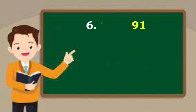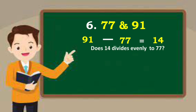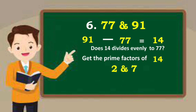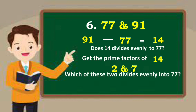How about item 6: 77 and 91? Subtract: 91 minus 77 is equal to 14. Does 14 divide evenly into 77? 14 is far from 77, so just get the factors of 14. These are 2 and 7. Choose which of these divides evenly into 77 — it is 7. Therefore, 7 is the GCF.